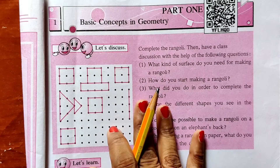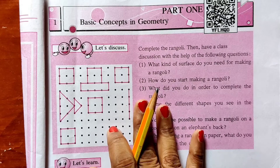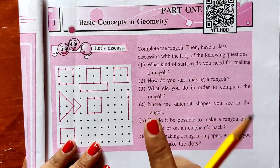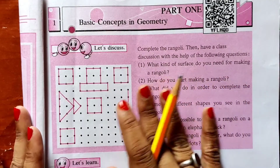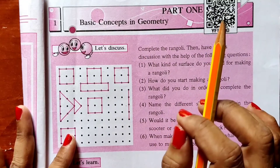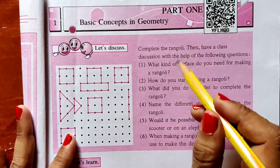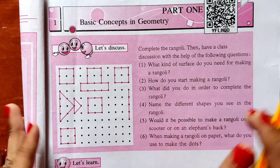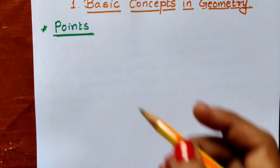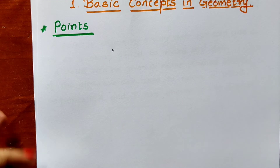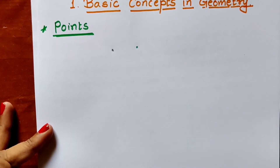When you all go to 9th standard, you can see that mathematics is divided into two parts. First part is algebra and second part is geometry. In geometry, the basic figure is point. A point is a tiny dot which we can draw with the help of pen or pencil. So any dot is known as a point.